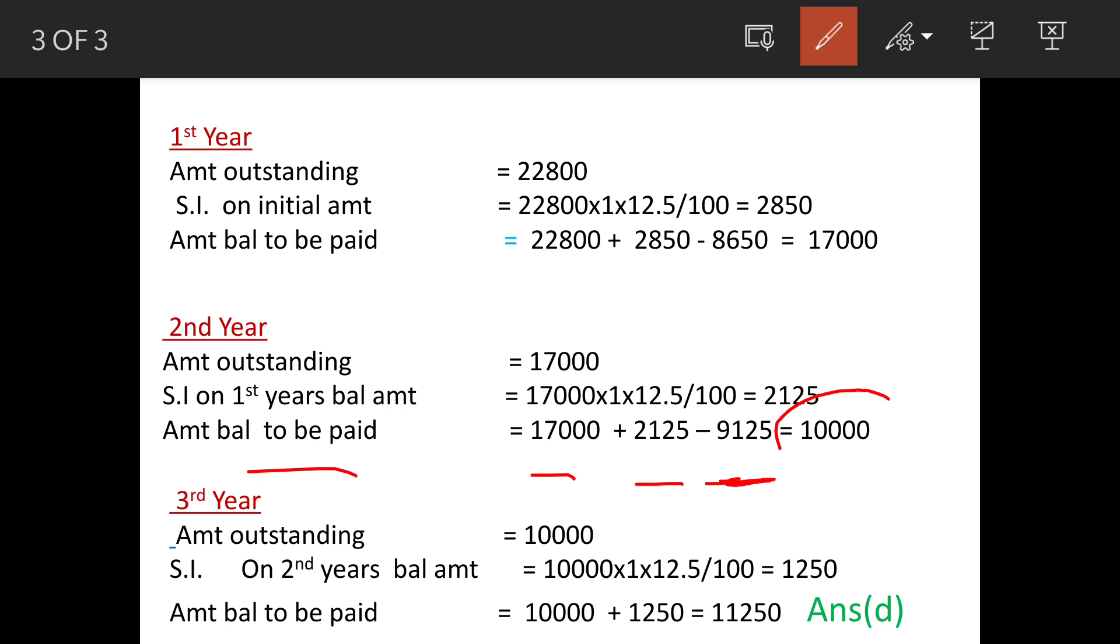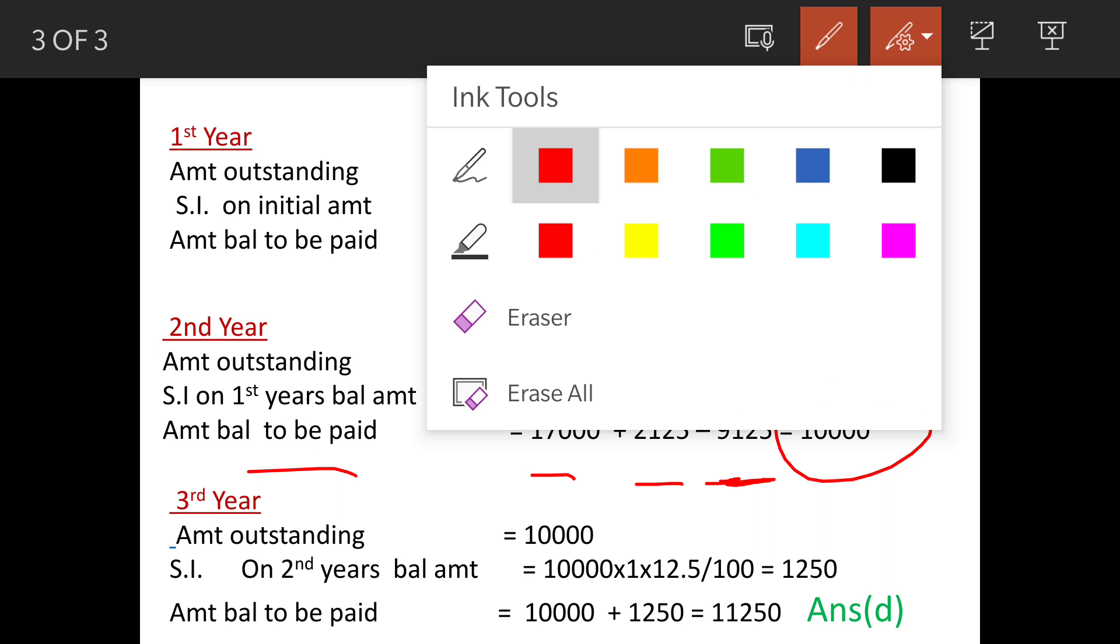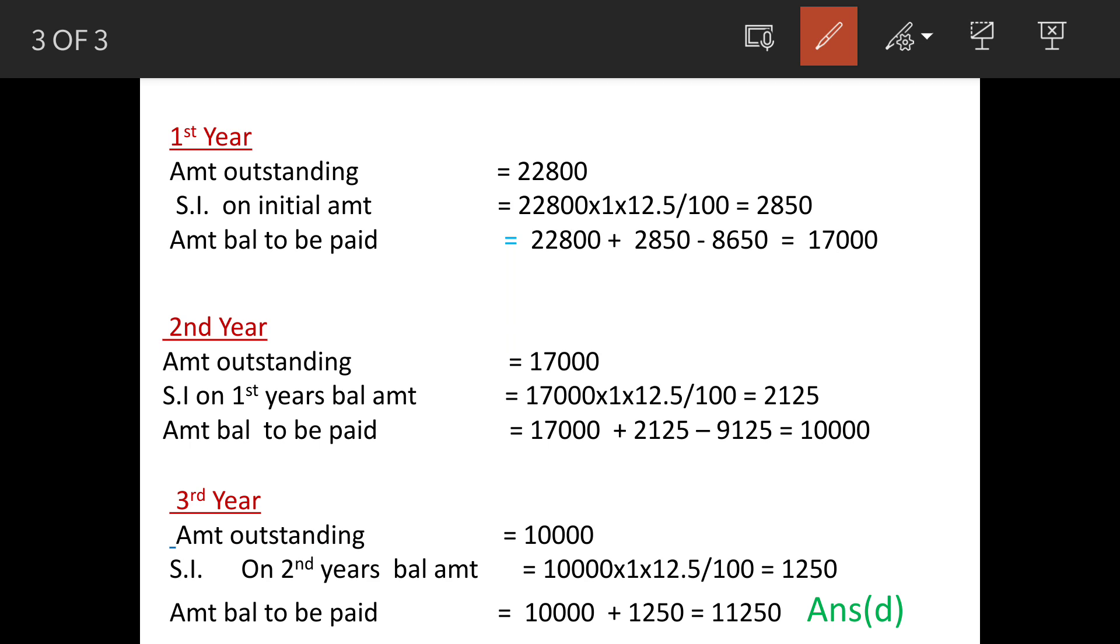So the balance is 10,000 rupees at the end of second year. Now in similar manner, if you calculate for third year, you will find that balance amount at the end of third year is 11,250. So that means the answer is option D.